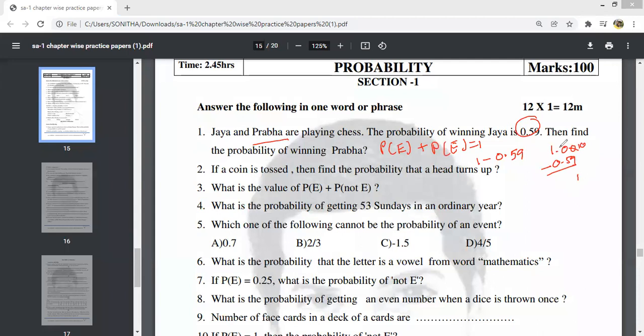10 minus 9 is 1, and 9 minus 5 is 4, so it is 0.41. The probability of winning for Prabha is 0.41.